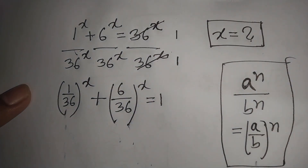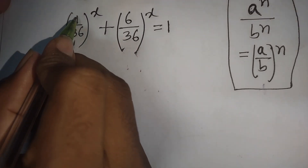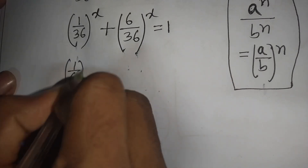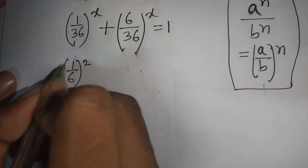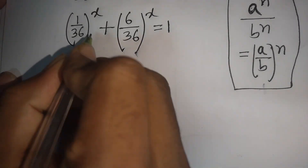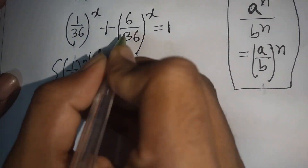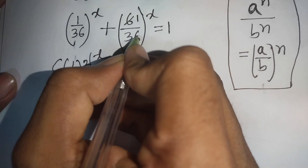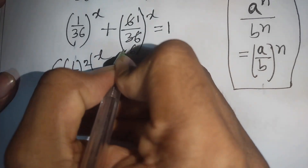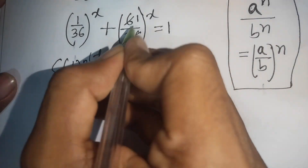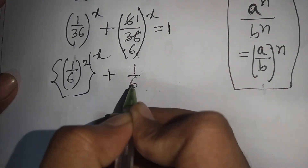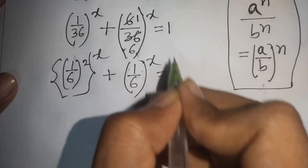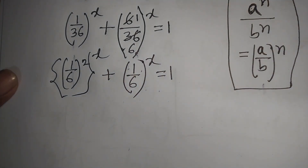Now, 1/36 can be written as (1/6)², so the first bracket becomes (1/6)^(2x). And 6/36 simplifies to 1/6, so we have (1/6)^(2x) plus (1/6)^x is equal to 1.